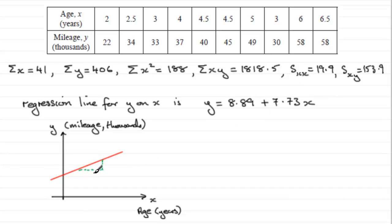So what we're saying then is if this is one year, we've got a rise here of 7.73. So for every one year, a typical car, its mileage is going to be roughly 7.73 thousand miles or 7,730 miles.